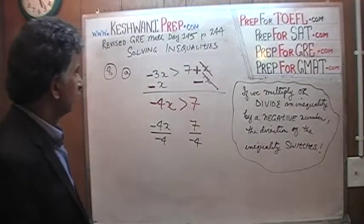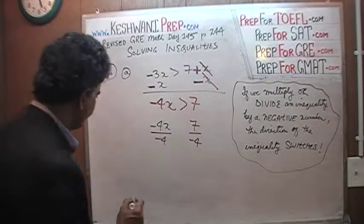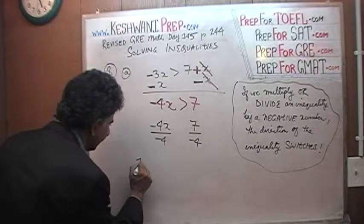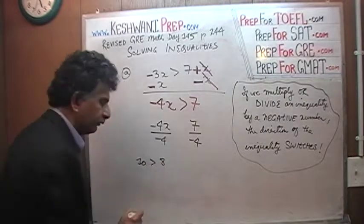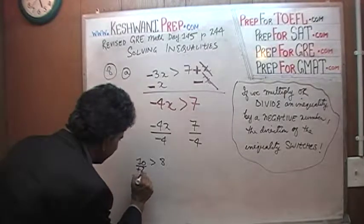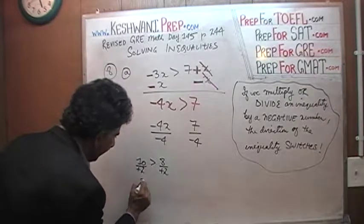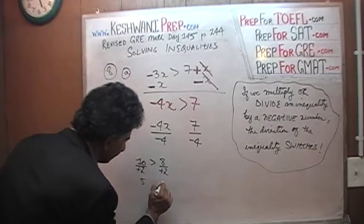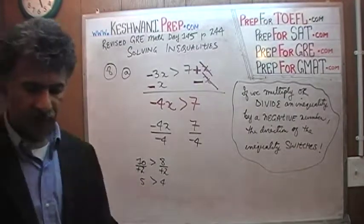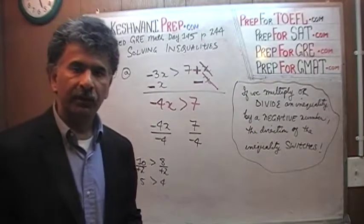Let me show you very quickly why. For example, would you agree that 10 is more than 8? Of course — 10 is greater than 8. Now, if you were to divide both sides by positive 2: 10 divided by positive 2 is 5, and 8 divided by positive 2 is 4. This is still true that 5 is more than 4 — nothing happens to the direction of the inequality.